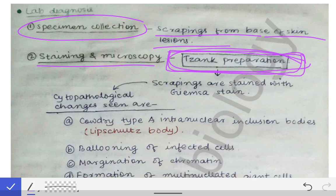The Tzanck preparation is made by taking scrapings, smearing them on a slide, and staining with Giemsa stain. This stained slide preparation is called the Tzanck preparation — a specific name given to these stained scraping slides.